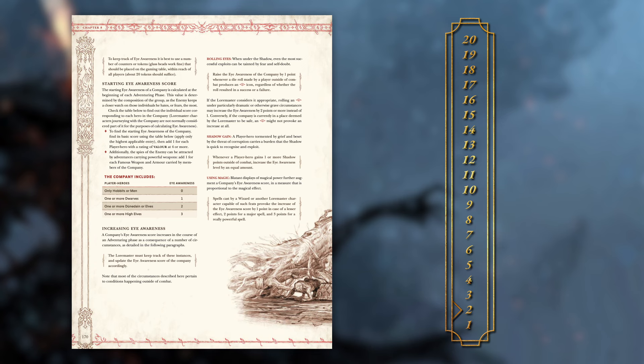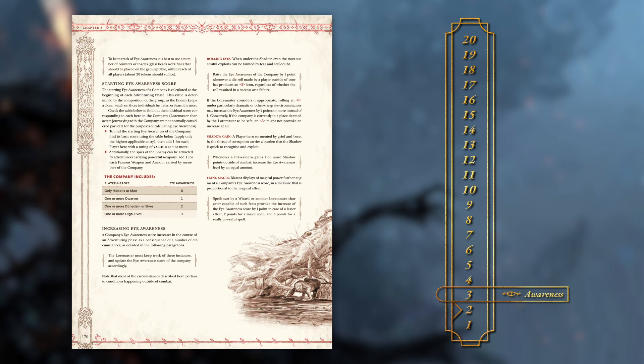Now that you have the starting Eye Awareness, your players are ready to start adventuring. As the game progresses, there will be a number of circumstances that will cause the score to increase. Whenever an Eye is rolled, or a player hero gains shadow outside of combat, raise the Eye Awareness score by 1. If the situation is particularly dramatic, the Loremaster may choose to raise the score by 2 or more.